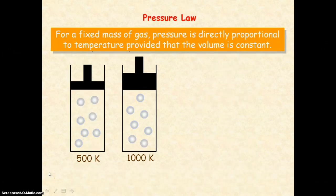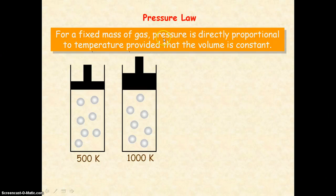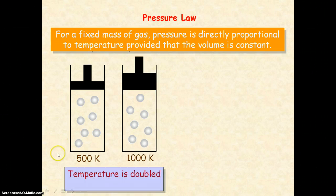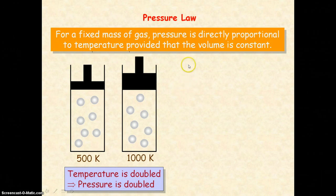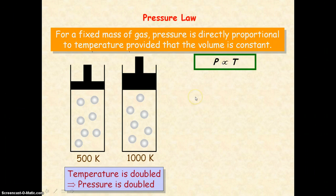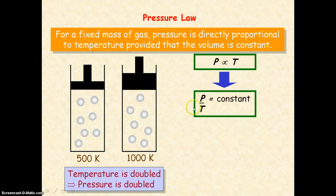The pressure law states that for a fixed mass of gas, the pressure is directly proportional to the temperature, provided that the volume is kept constant. So the pressure law is looking at the relationship between pressure and temperature of the gas. If the temperature of the gas is doubled and the volume is kept constant, then the pressure is also going to be doubled. Again, the temperature here is in Kelvin — absolute temperature. Mathematically, pressure is directly proportional to temperature, so pressure divided by temperature equals a constant.